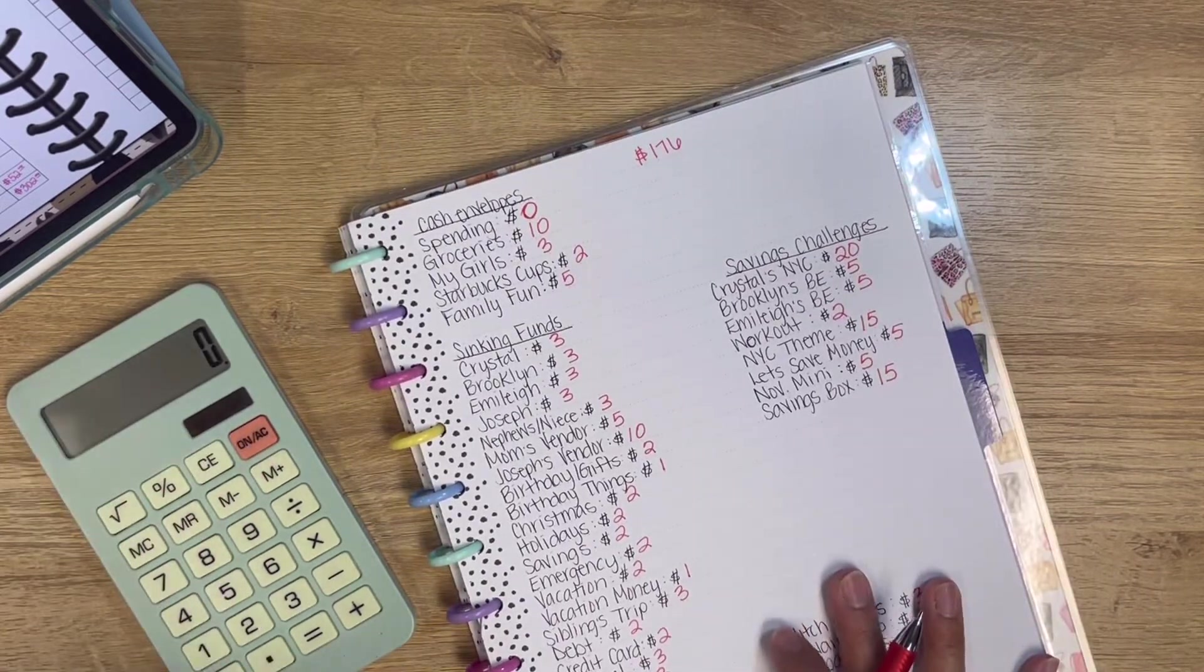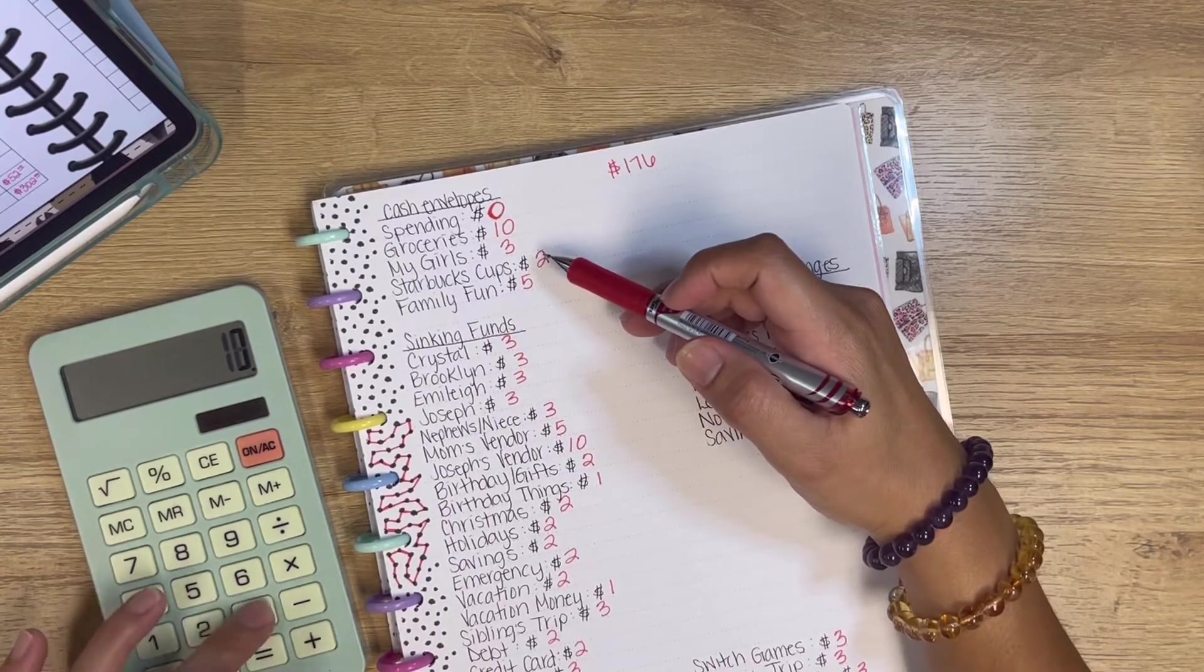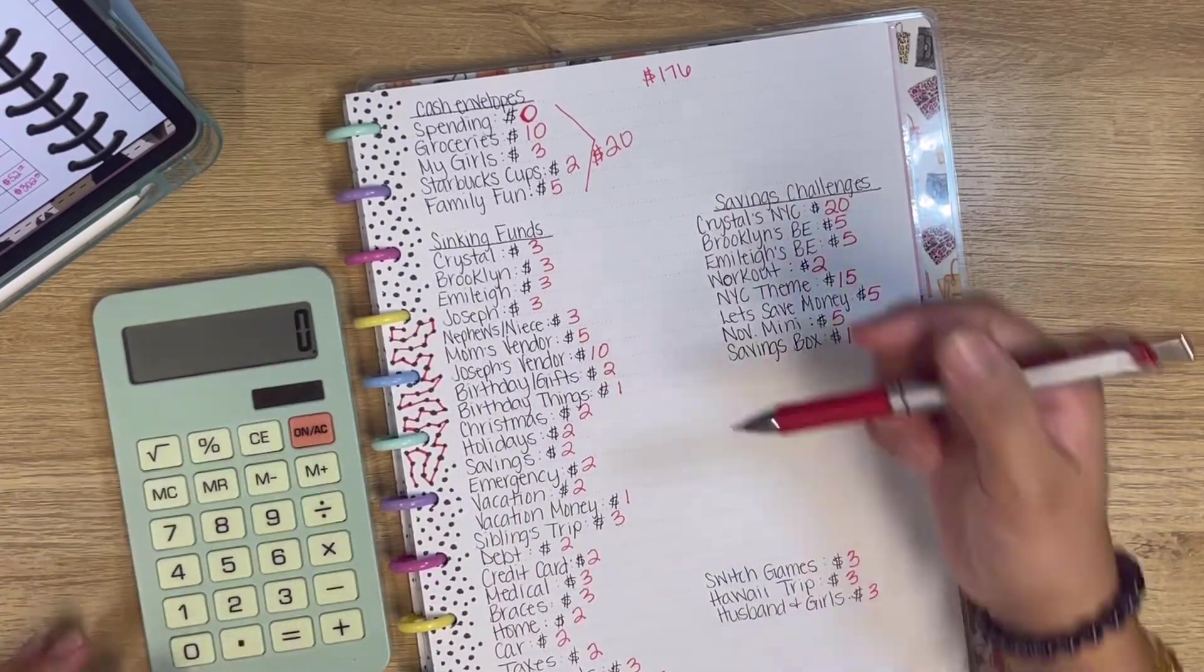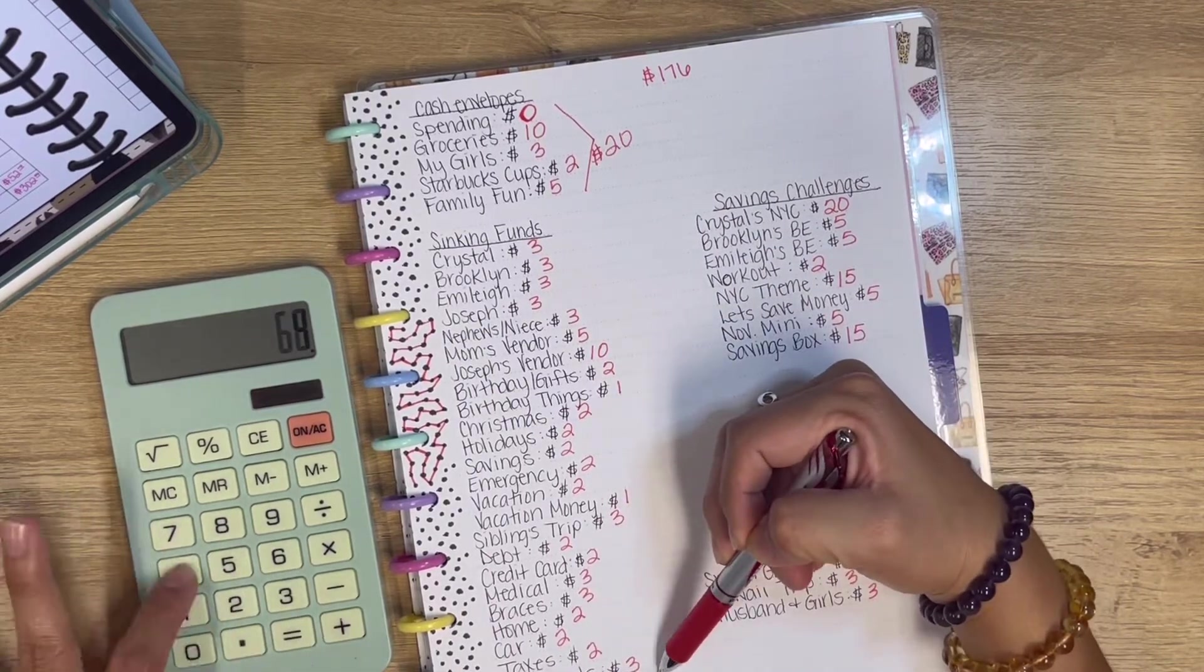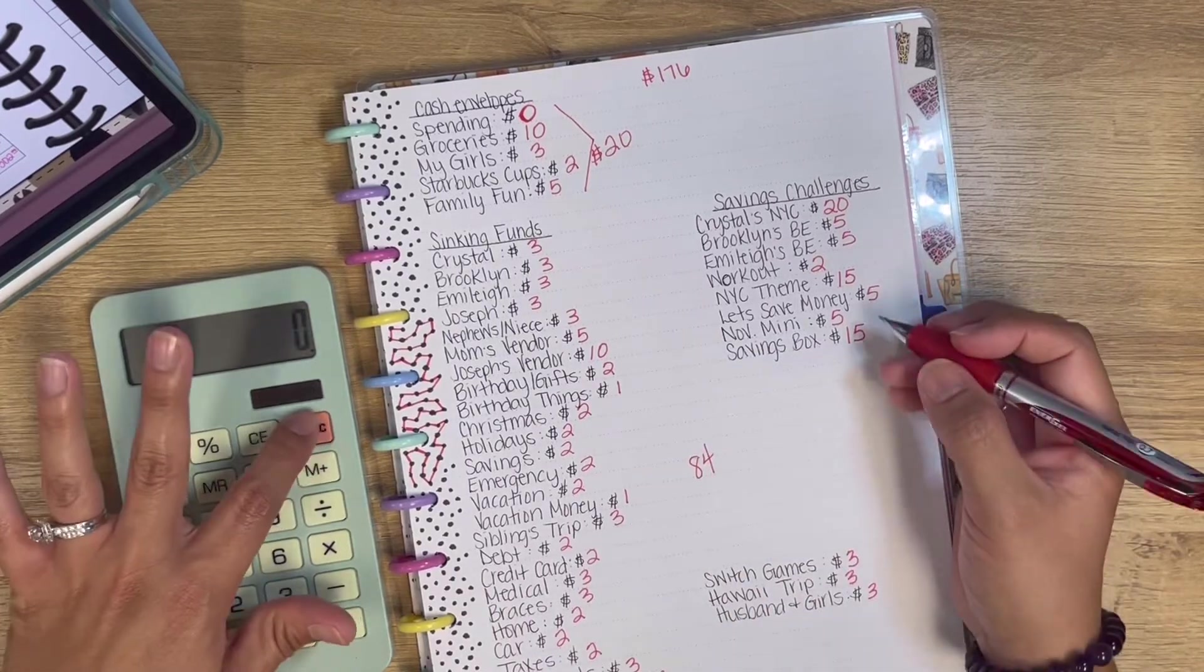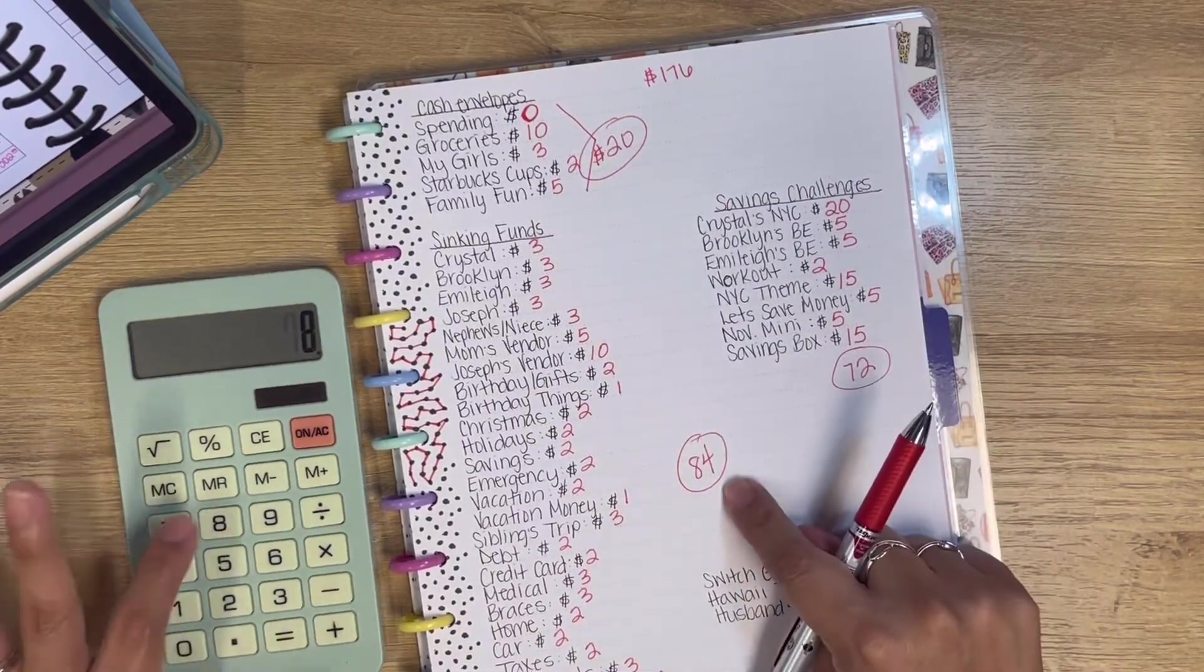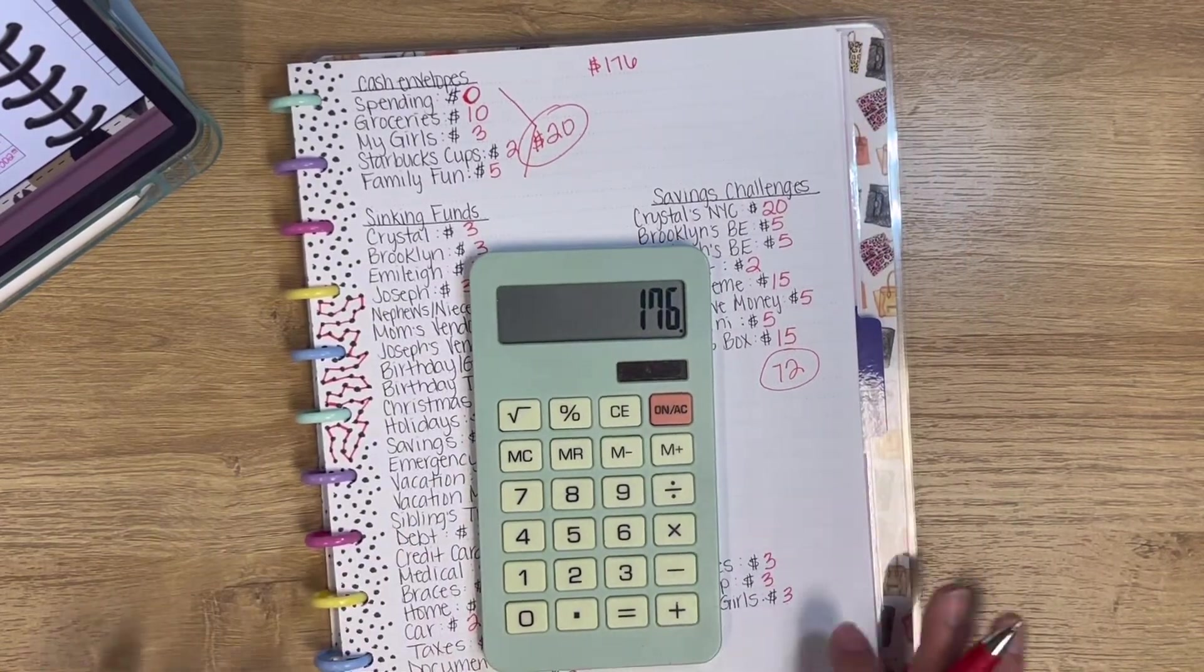So we're going to add all of this and make sure that we have $176. So we're going to add up my cash envelope. So it's $10 plus $3 plus $2 plus $1. So this one here, we're going to be putting in $20. I'll just speed up the process. So this one is $84. And then $72. So $72 plus $84 plus $20 equals $176. $176 is what we are working with, which is correct.